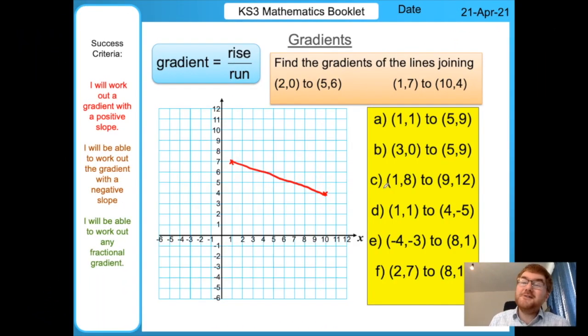Hopefully you paused the video. I'm just going to give you the answers now. The first one's equal to 2, the second one is 4.5 or 9 over 2, next one is a half, next one's minus 2, next one's a third, and the last one's minus 1. Hopefully you got those answers and this is now making much more sense.